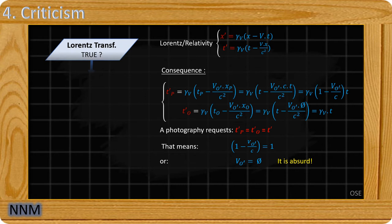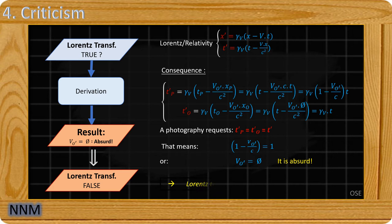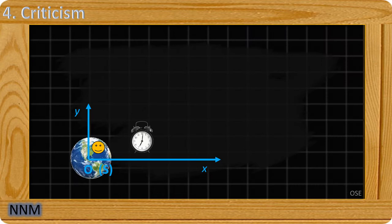He then obtains that the speed V must be equal to zero. It's absurd. So the Lorentz transformation assumption is wrong. Let's continue the calculation over time and length.